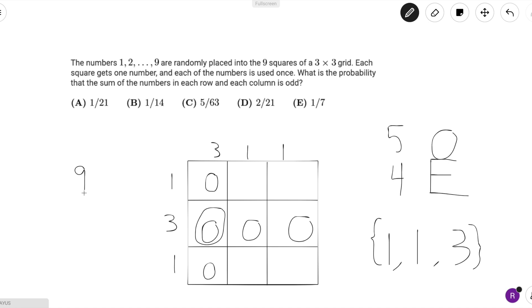Now, how many total ways are there to arrange the odds and evens? Well, there are nine total squares, and there are five odds to choose from. So that's simply just nine choose five.